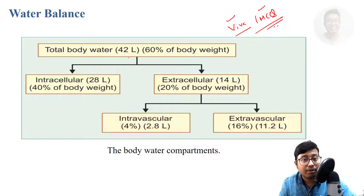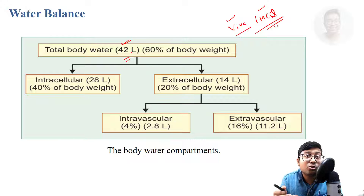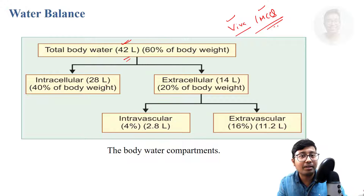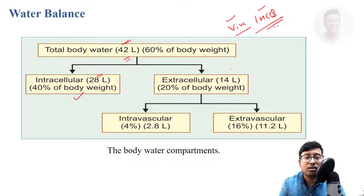The total body water in an average human being, considering 60% of body weight, is 42 litres. If 60% is 42, you can calculate the total weight. Among them, we can divide the whole thing into intracellular and extracellular. The intracellular component is 40% of body weight, that is 28 litres, and extracellular is 14 litres, that is 20%.